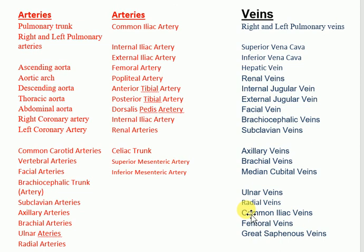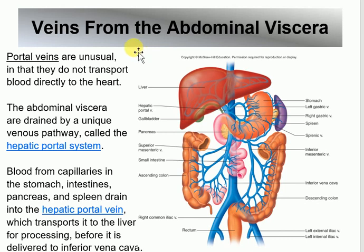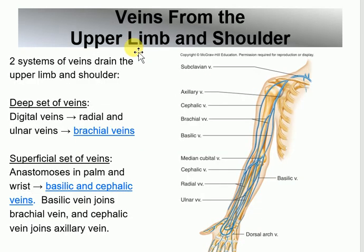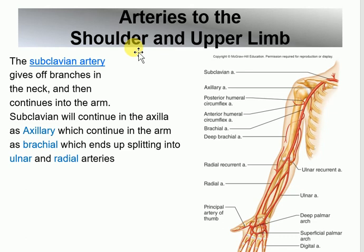Also missed: the renal arteries, the celiac trunk, the superior mesenteric artery, and the inferior mesenteric artery. For the lower limb: common iliac, internal/external iliac, femoral, popliteal, anterior tibial, posterior tibial, dorsalis pedis, and fibular — all covered. So the remaining structures to cover are the vertebral artery, renal arteries, celiac trunk, superior mesenteric, and inferior mesenteric.